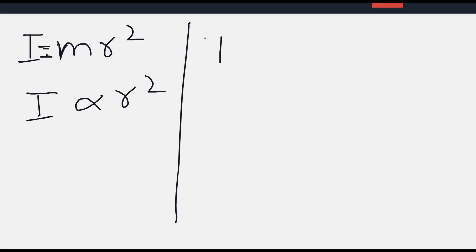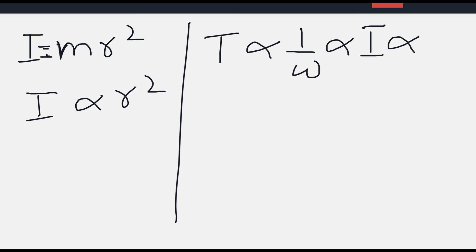Time period is inversely proportional to the angular velocity, and angular velocity is inversely proportional to the moment of inertia, and moment of inertia is directly proportional to the square of the radius. Therefore, time period is directly proportional to the square of the radius.